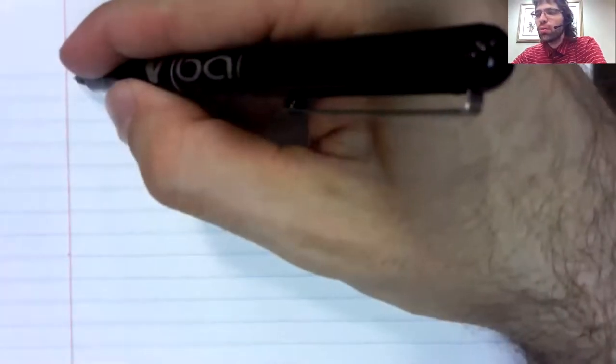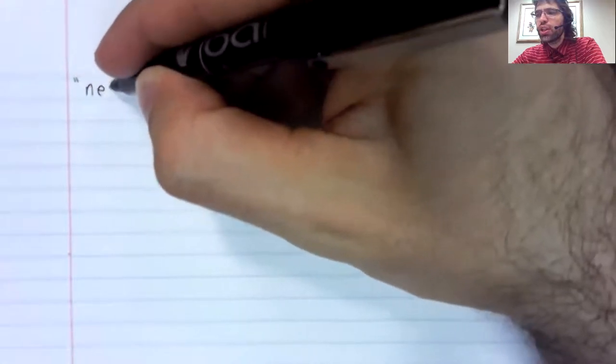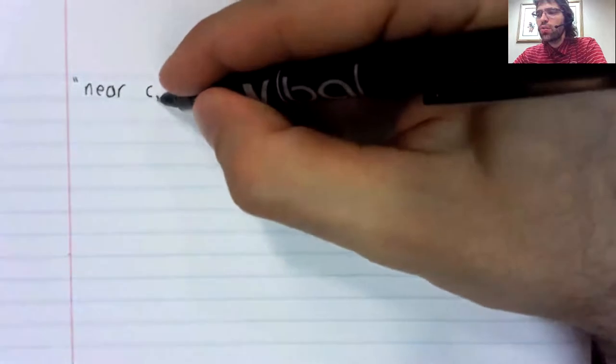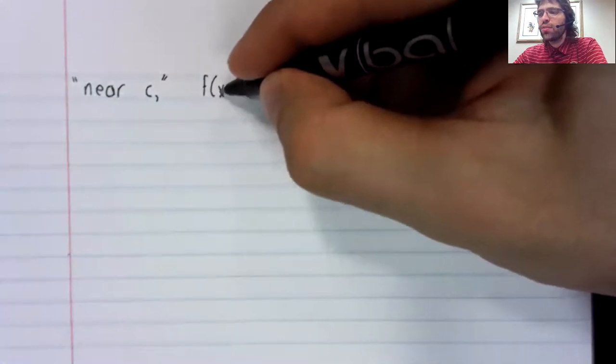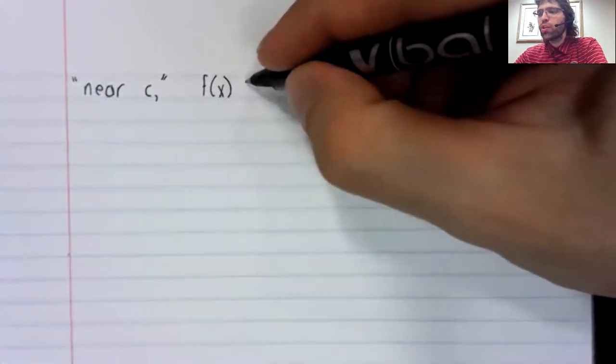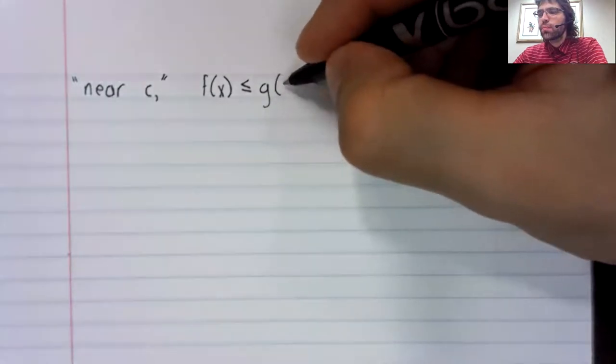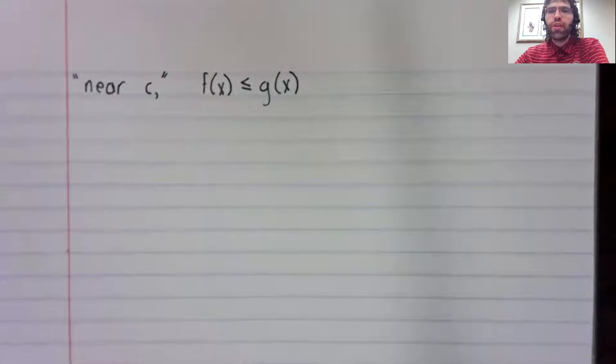So we're going to take a limit as X approaches C. And suppose we're in the following situation. Near C, we have a smaller function and a bigger function.